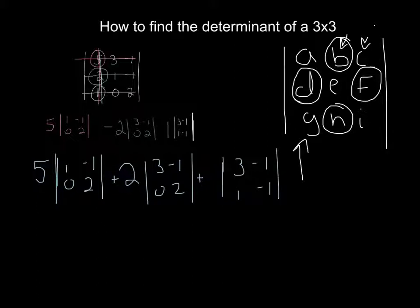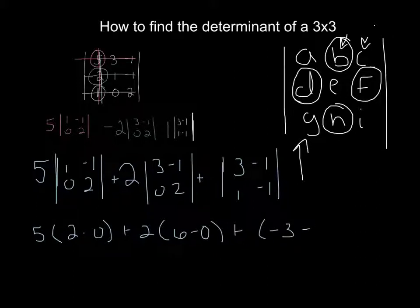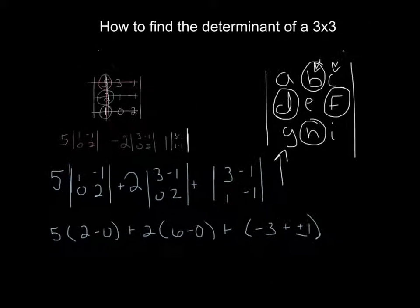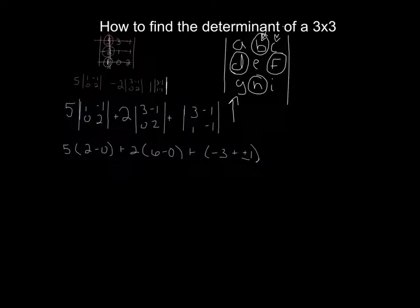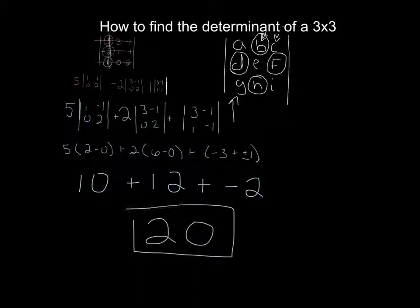And now you can go ahead and figure this out. So this would be 5 times 2 minus 0, plus 2 times 6 minus 0, plus 1 times -3 minus -1, which would be plus 1. So my determinant - 2 minus 0, well, using your order of operations, that's 2, so that would be 10, plus 2 times 6 is 12, plus -3 plus 1 is -2, and that would be 20. And so that's how you determine a 3 by 3.